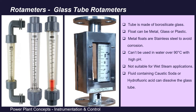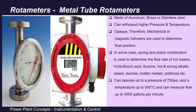The second type is metal tube rotameters. Here the tube is made up of aluminum, brass, or stainless steel. Since all these tubes are opaque, they can be used for high temperature and pressure applications. Since the tube is not transparent, the float is not visible directly for flow indication, so mechanical or magnetic followers are used to determine the float position. In some cases, a spring and piston combination is used to determine the flow rate of hot water.